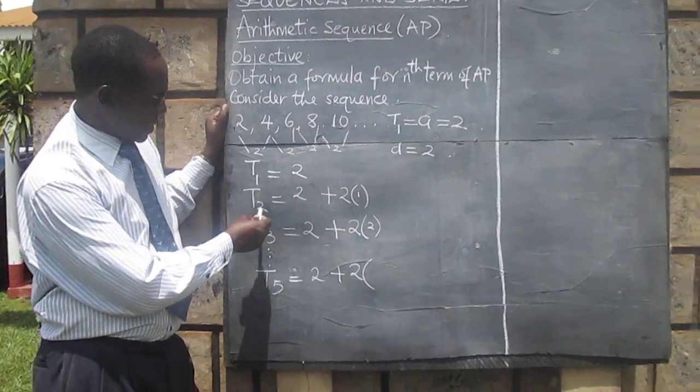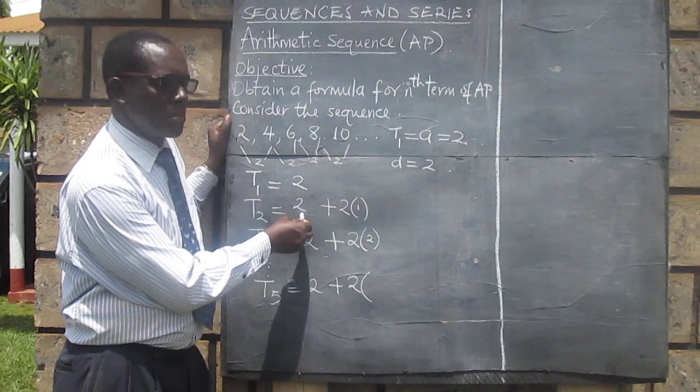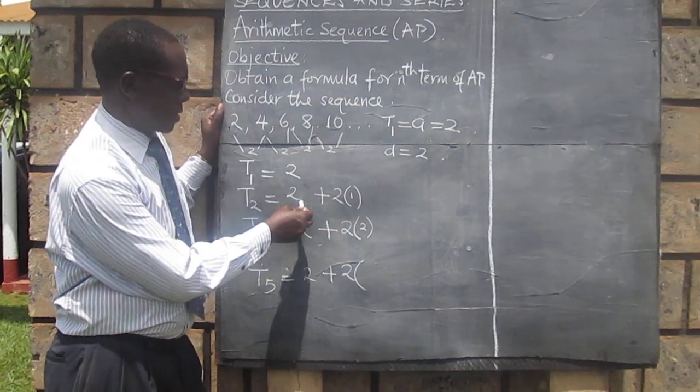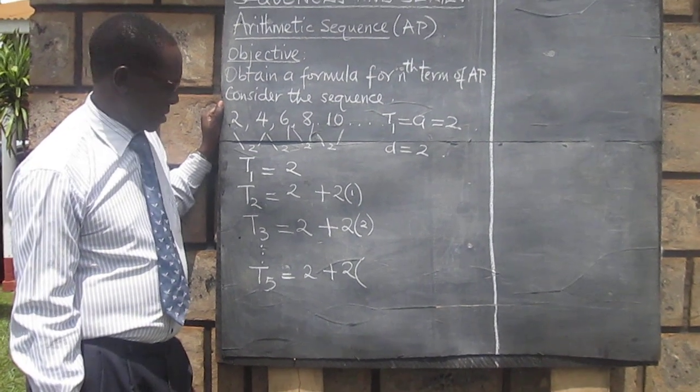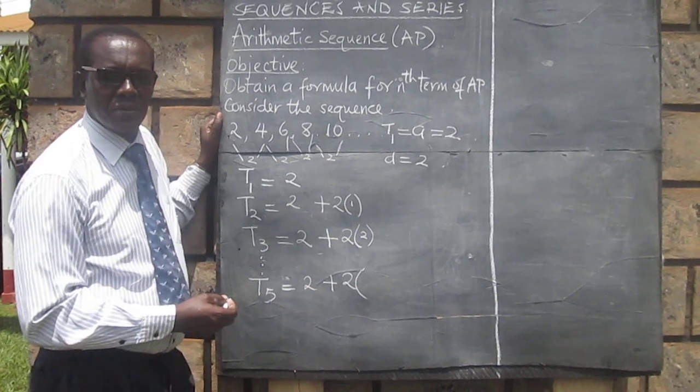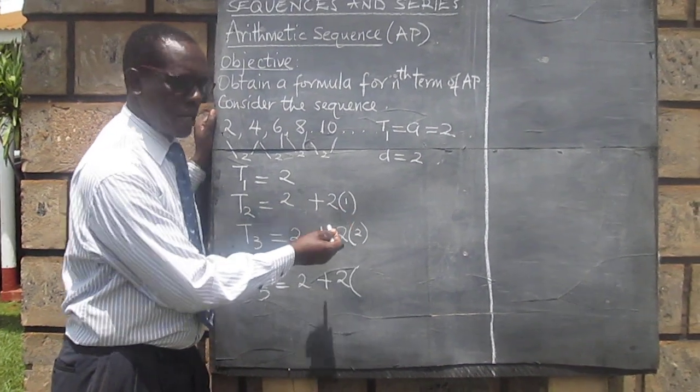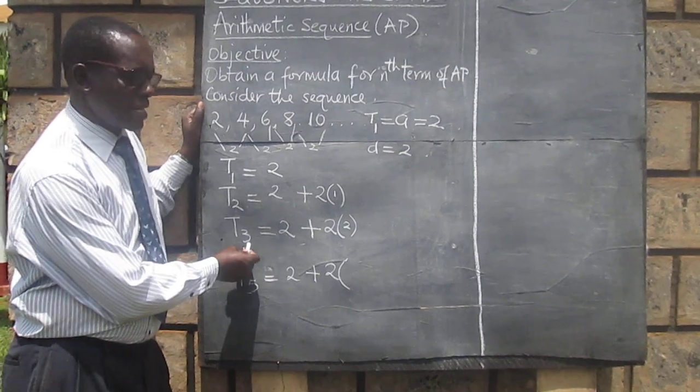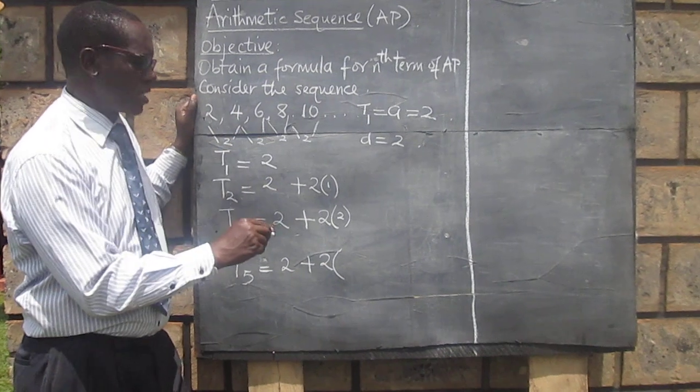the second term was the first term plus 1 times the common difference. And you can see the relationship between 2 and 1. We are looking for the second term, and yet we are talking of 1. Here we are looking for the third term, and we are talking about 2, 2 times the common difference.